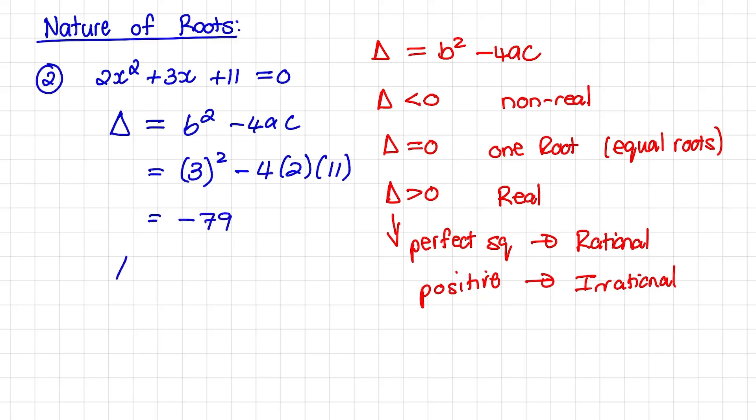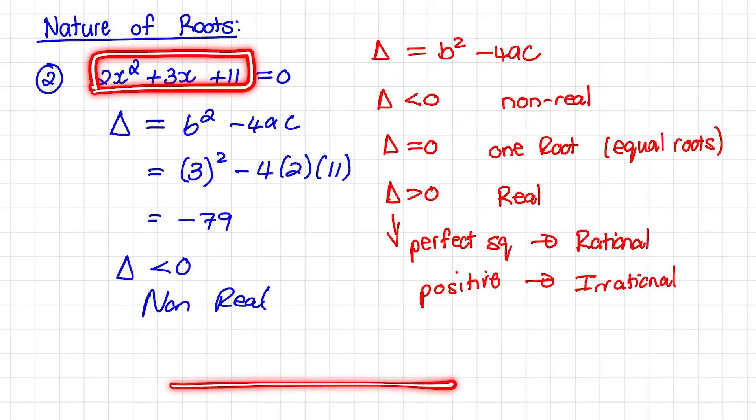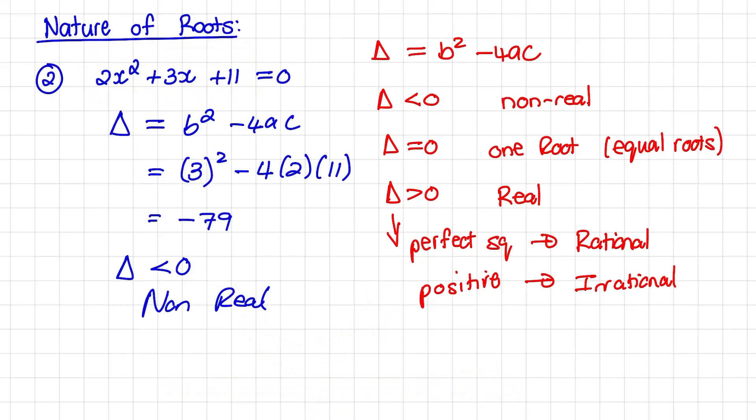So the discriminant is negative. Therefore, the roots are non-real. What it means is, if we plot this expression as a parabola, it will not intersect with the x-axis. So the roots do not exist on the x-axis.